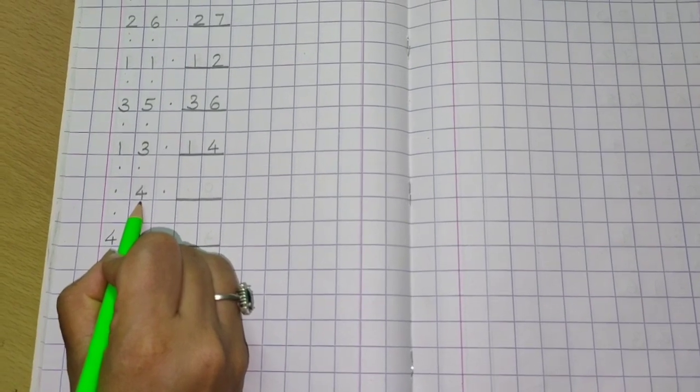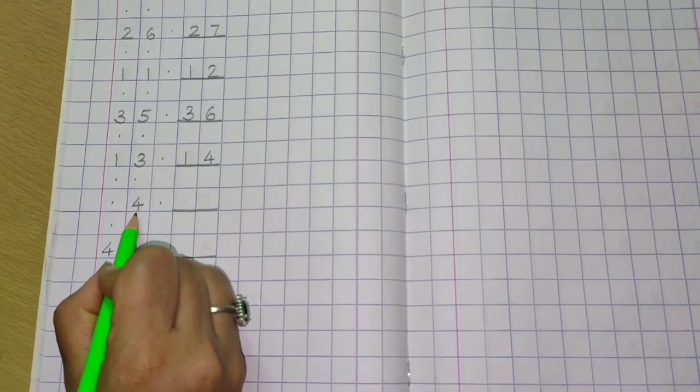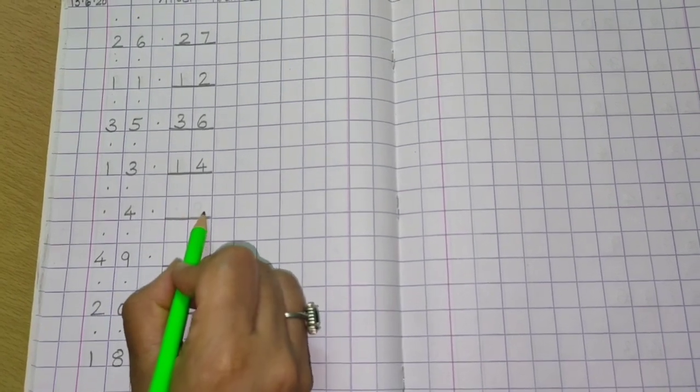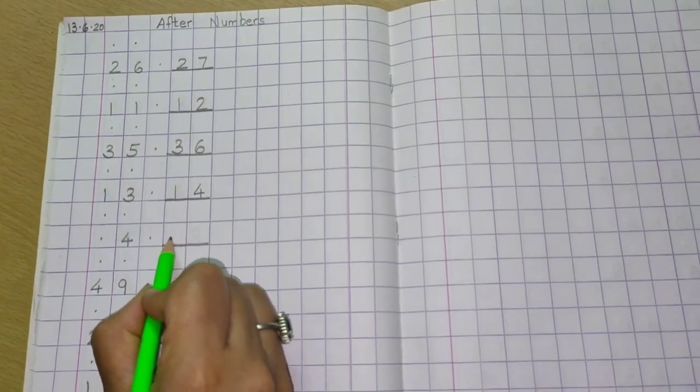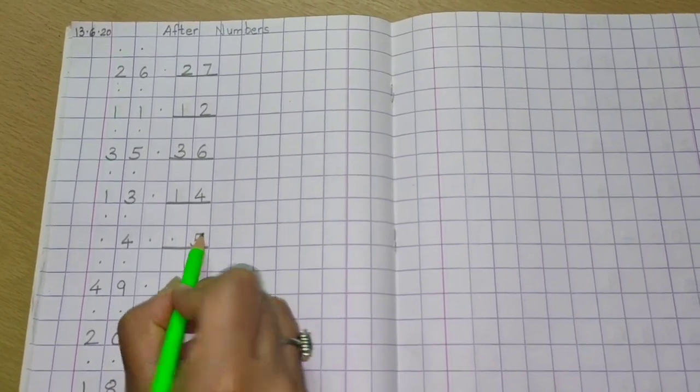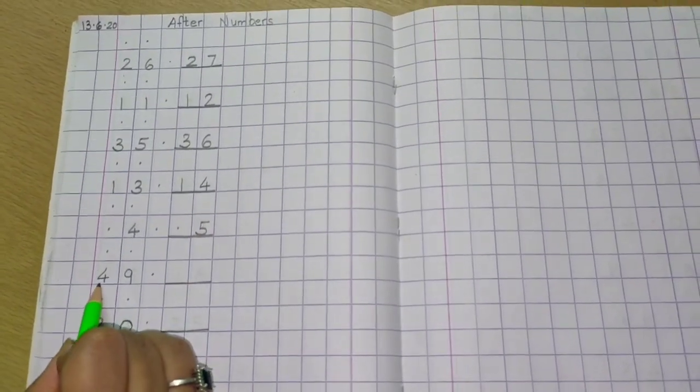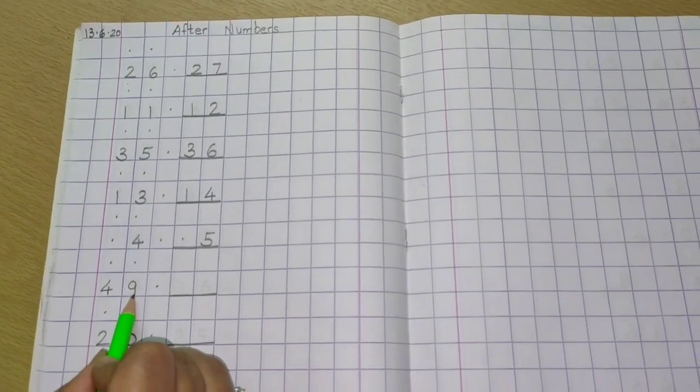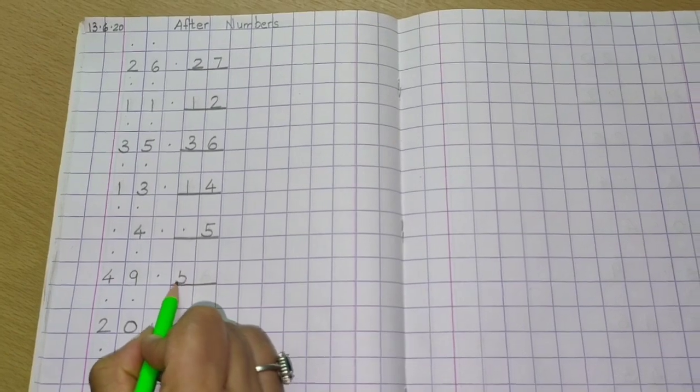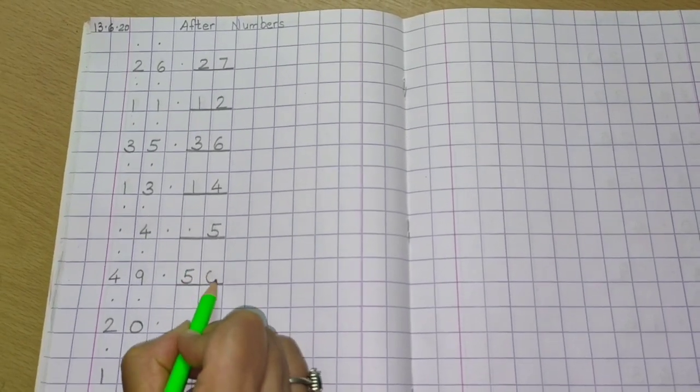Now we have a single number, number 4. After 4, 5. Very good. Where will you write 5? Yes, second box. So first box we make a dot and then we write number 5. Now 49. After 49, yes, 50.